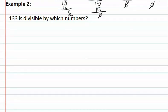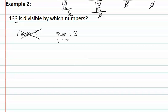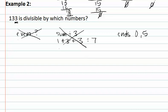Example 2 asks: 133 is divisible by which prime numbers? Let's look at our divisibility tests first. If it's divisible by 2, the last digit needs to be even. The last digit is a 3, which is not even, so it is not divisible by 2. Next, we check if the sum of the digits is divisible by 3: 1 plus 3 plus 3 gives us 7. Since 7 is not divisible by 3, the whole number is not divisible by 3. We also check for 5: it needs to end in a 0 or 5, but it ends in a 3, so the number is not divisible by 5. This means we need to use long division.